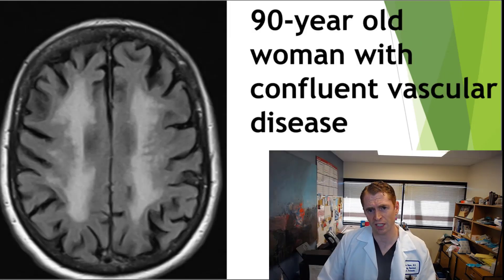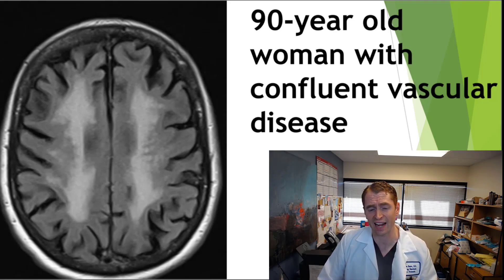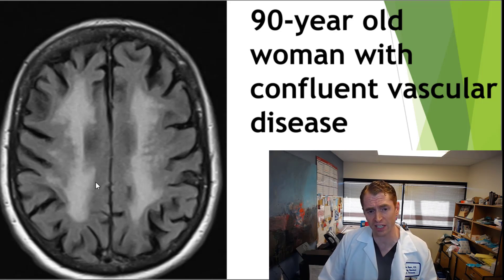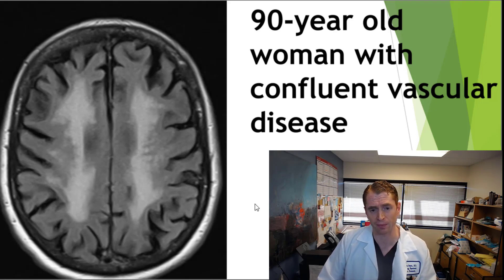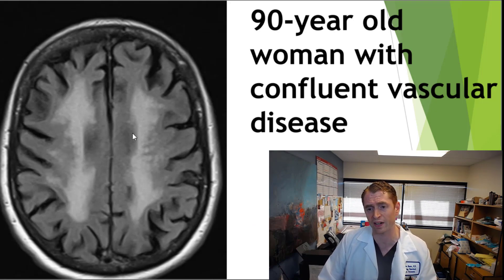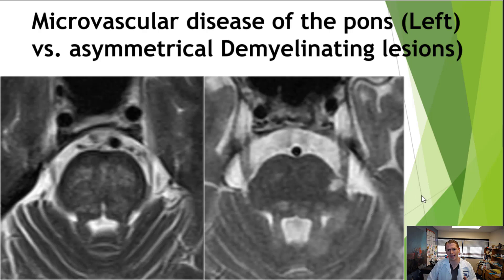In cases where the lesions are more advanced, it can be quite difficult to discriminate between demyelinating disease and vascular disease. This is a 90-year-old woman with extensive white matter lesions, but you can see it primarily involves the subcortical white matter and doesn't involve the periventricular areas as much. The juxtacortical areas are somewhat spared. Sometimes looking closely at the brainstem can be helpful — here we're looking at axial slices at the level of the pons.